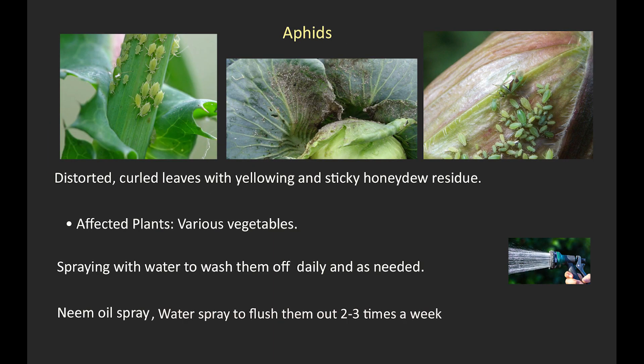5. Aphid damage. Symptoms: distorted, curled leaves with yellowing and sticky honeydew residue. Affected plants: various vegetables. Treatment: neem oil and water spray to flush them out 2 to 3 times a week.